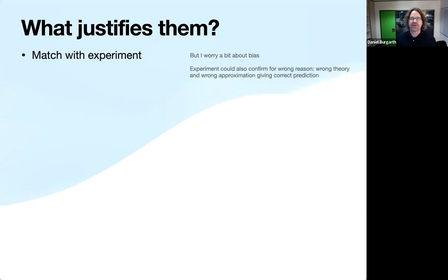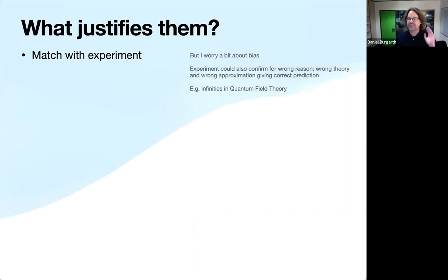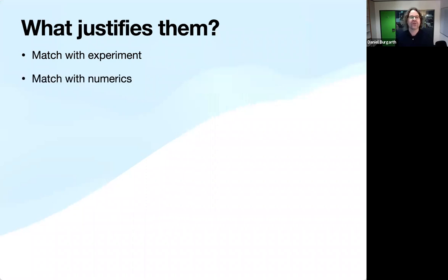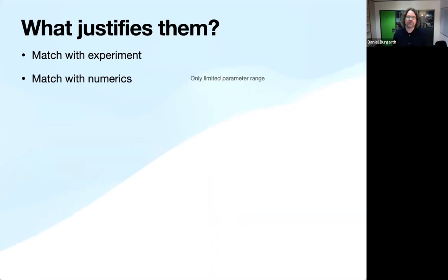I would suggest quantum field theory might be one of those subjects — frankly the theory must be wrong, the approximations are wrong, but the experimental predictions are fantastic. Another justification is of course the match with numerics, although we know that numerics can only cover a limited parameter range, so it's not always conclusive.